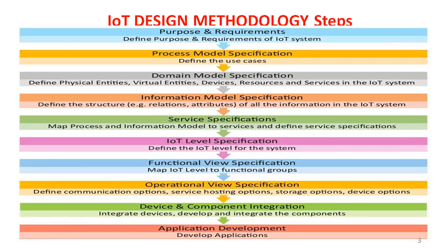The next step is the functional view specification. The functional view specification maps the IoT level to functional groups. There is a mapping process between the IoT levels and the different functional groups.